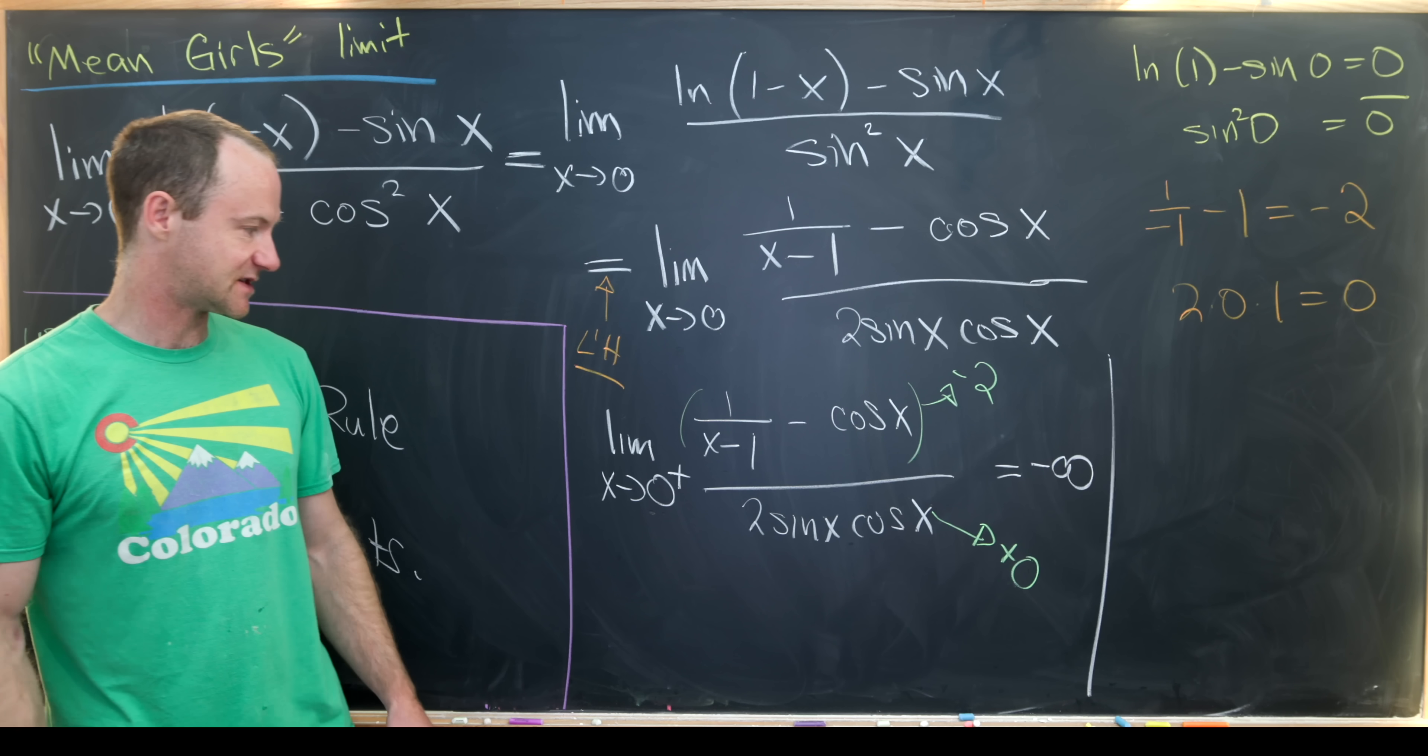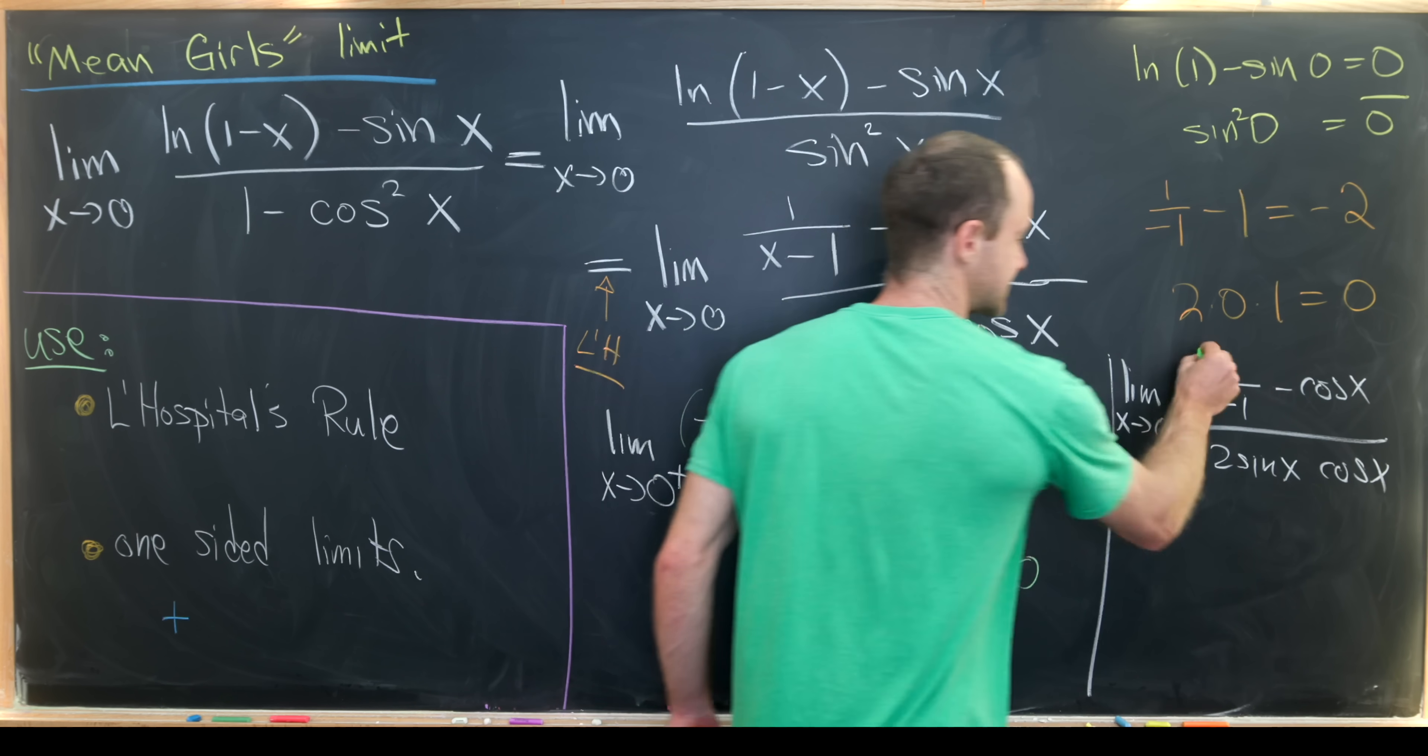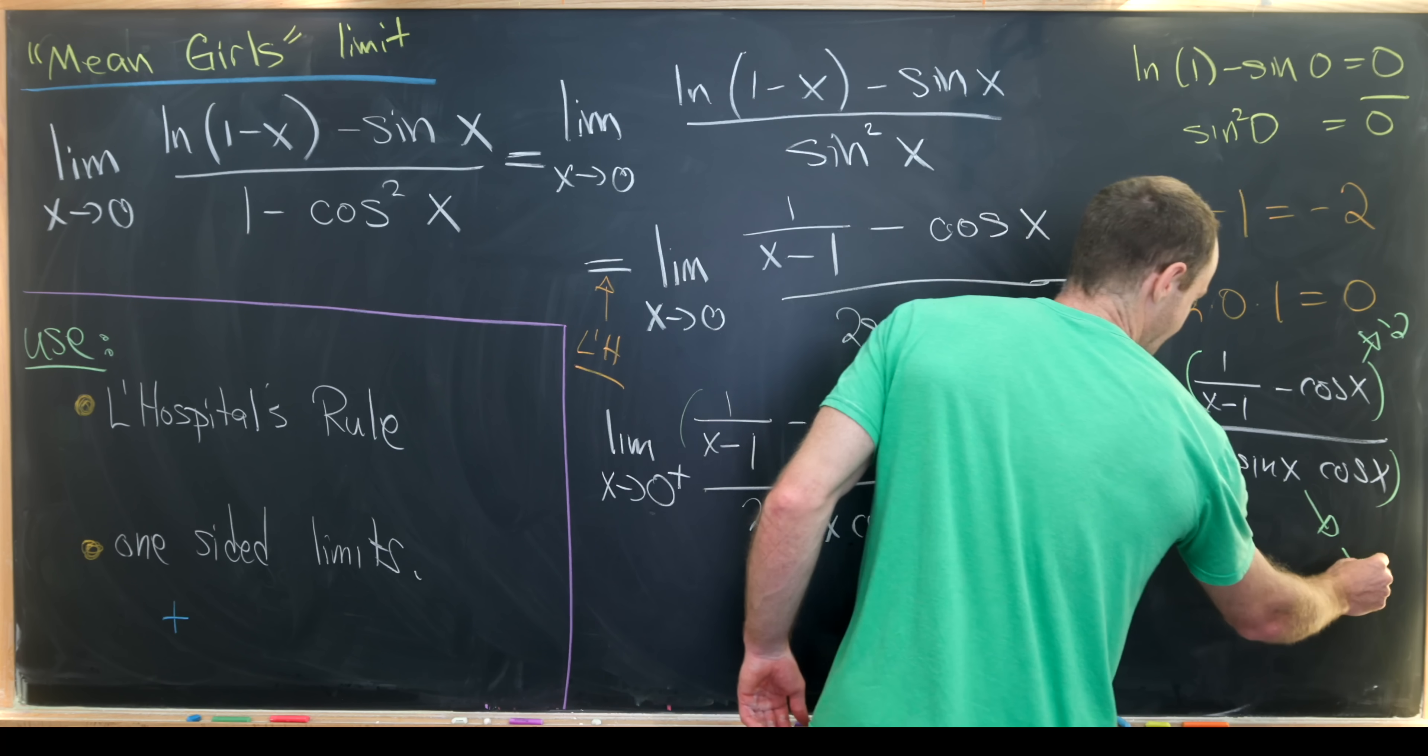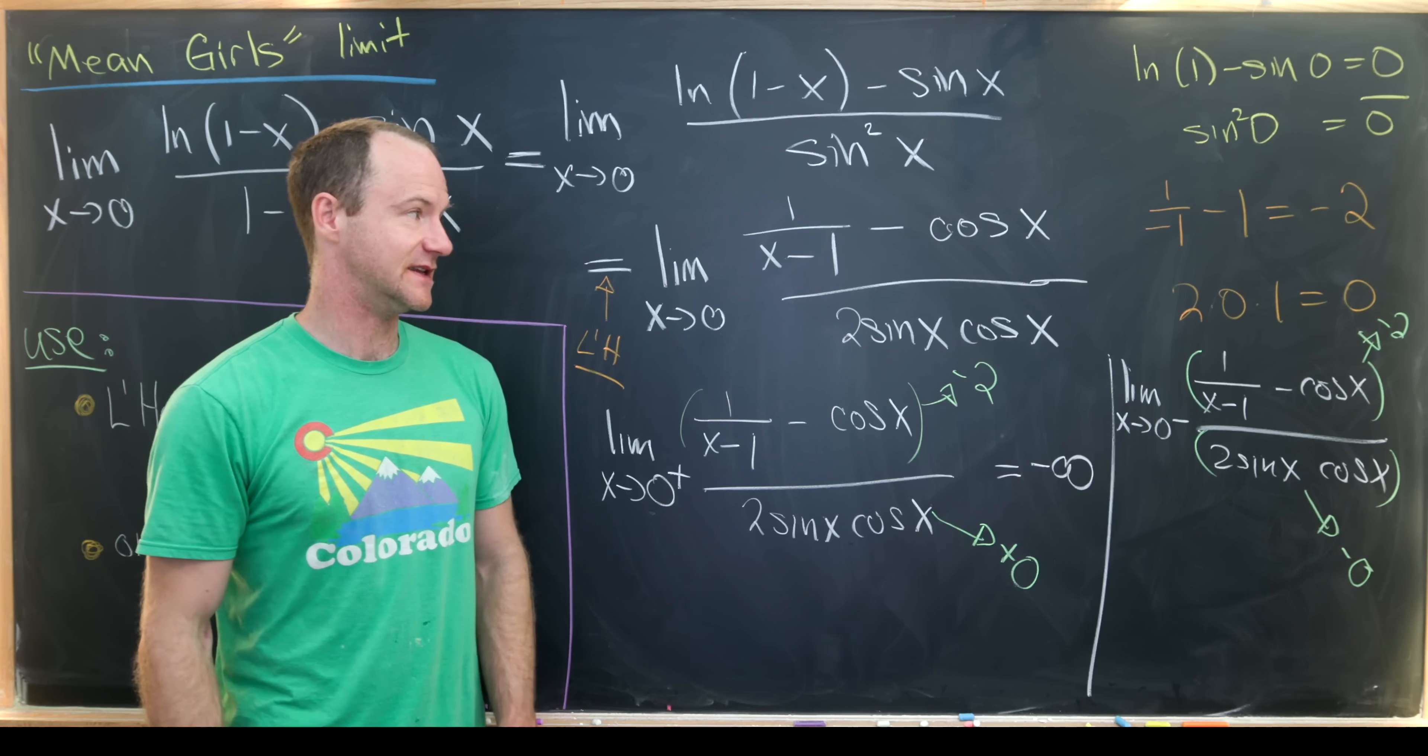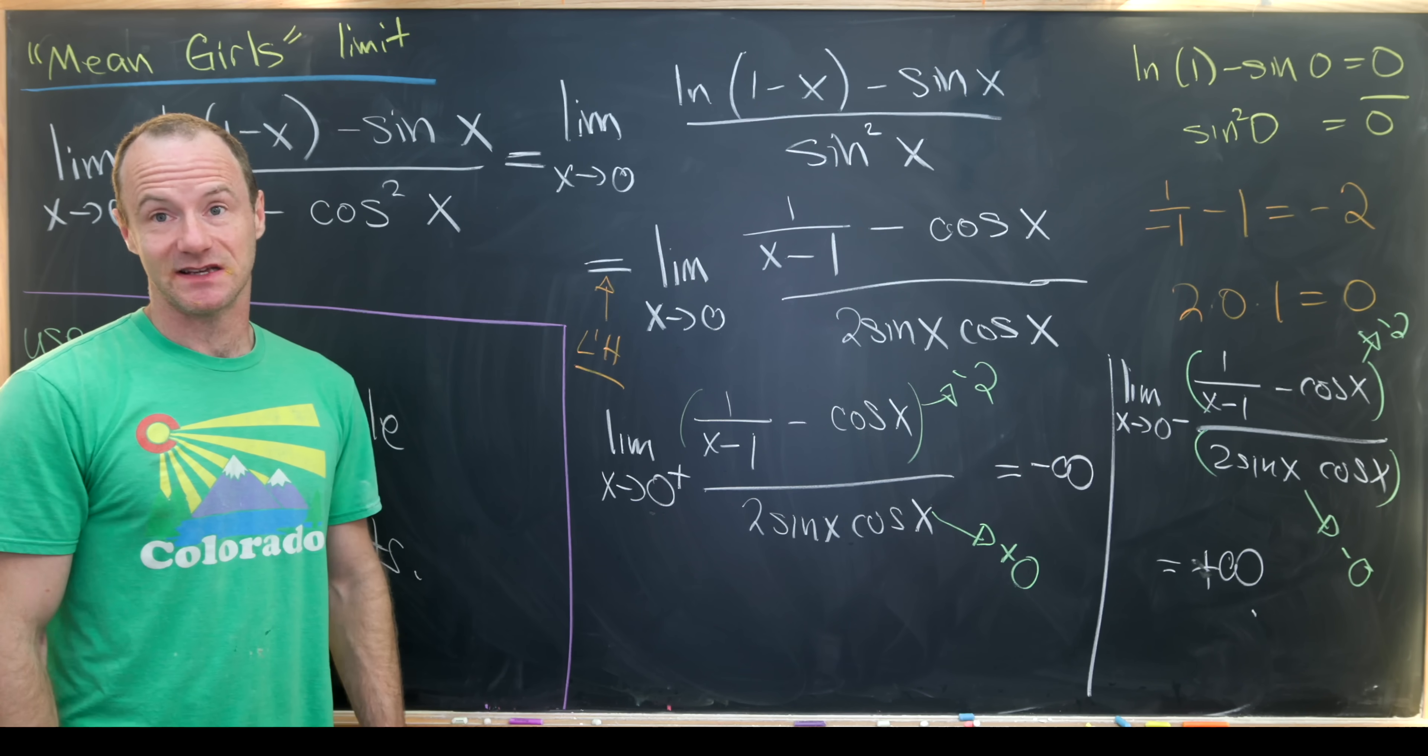And now we can do the same sort of analysis on the other-sided limit. So the limit as x goes to 0 from below of 1 over x minus 1 minus cos x over 2 sine of x cos x. This numerator is still trending off towards negative 2, whereas now this denominator is trending off towards what I'll call negative 0. What I mean by that is that it approaches 0, but the values it approaches along are all negative. That's because sine of something a little bit smaller than 0 is negative. But that means that this will approach positive infinity. So from one side, this limit approaches negative infinity, the other side approaches positive infinity, which says this limit does not exist.